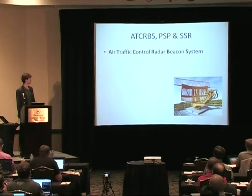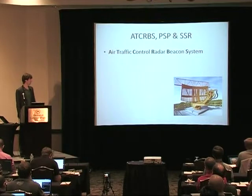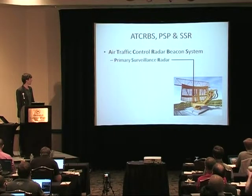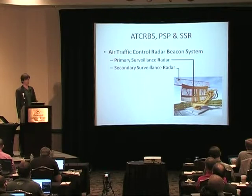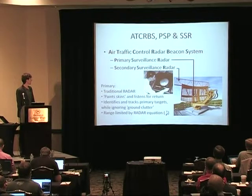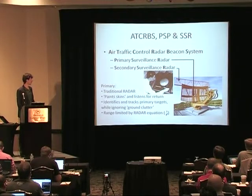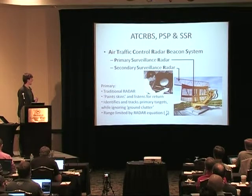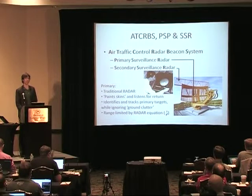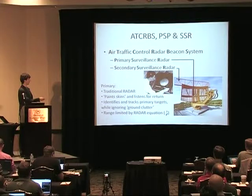How does air traffic control actually do it? It's part of the radar beacon system and there are two systems in use today. One is the primary surveillance radar and the other is the secondary. The primary is what we traditionally think of when we talk about radar — this enormous radar dish that spins around, sending out an incredibly strong pulse, painting the metallic skin of any flying aircraft.